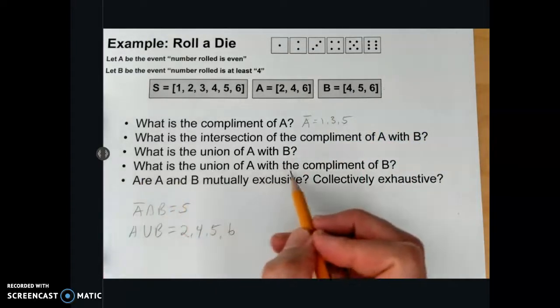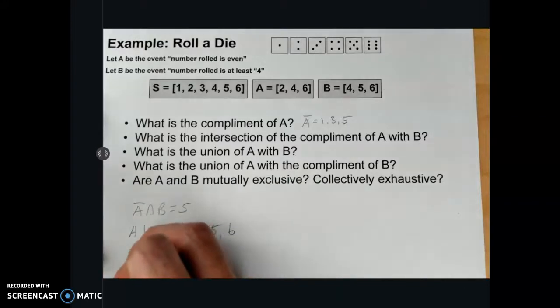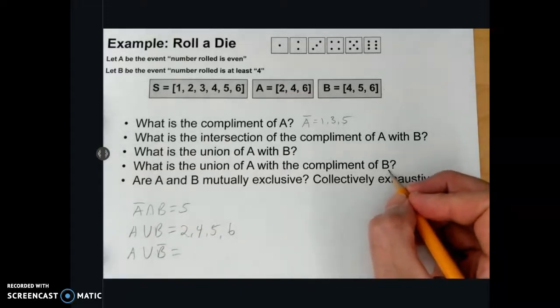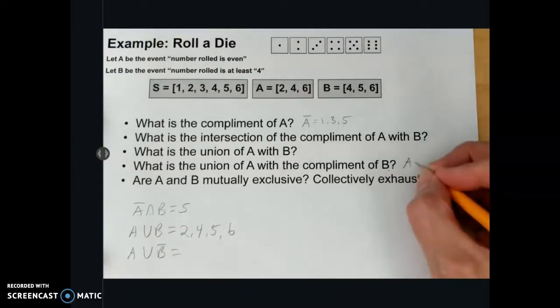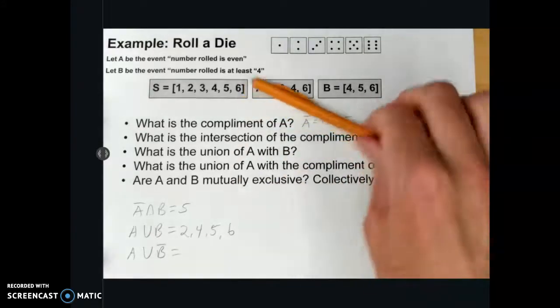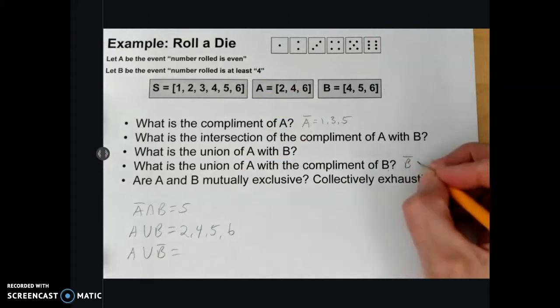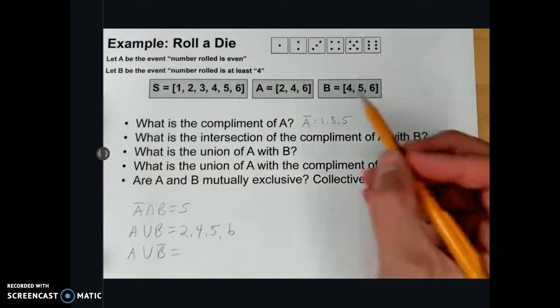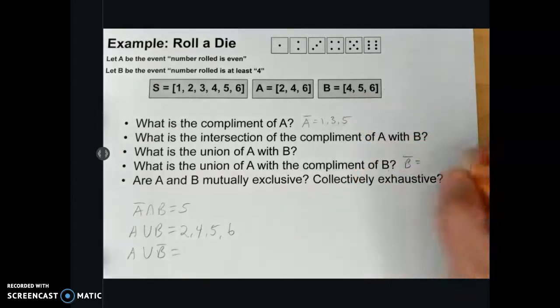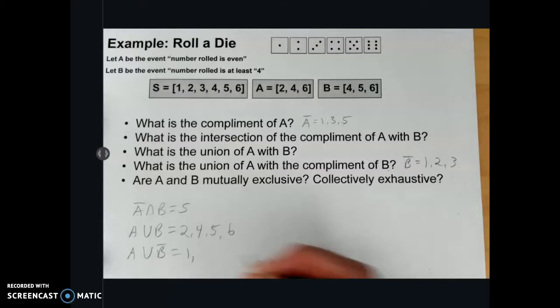What is the union of A with the complement of B? Well, we need to know what the complement of B is. And the complement of B would be everything in the sample space that is not part of B. So it would be 1, 2, 3. As a result, A union B complement is A or B complement. So it's everything in A, 1, and everything in B, 2, 3, 5.